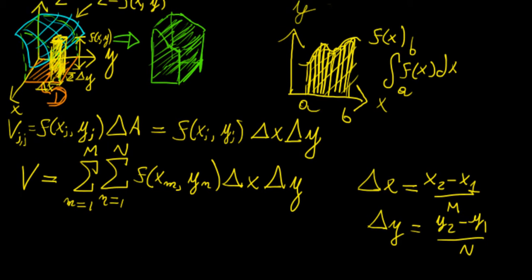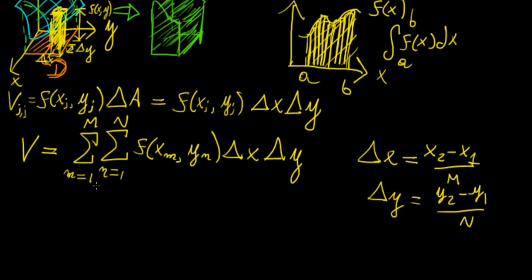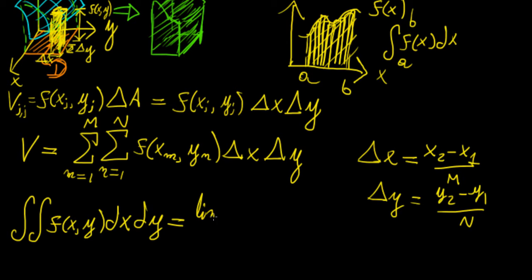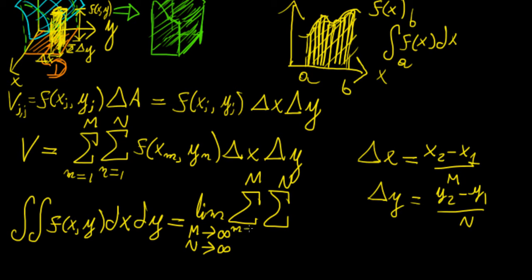Taking the limit as this double Riemann sum — as M and N both go to infinity — gives us the double integral. So the double integral is defined as the double integral of f dx dy, equal to the limit as M goes to infinity and N goes to infinity of the double sum of f(x_m, y_n) times delta x delta y.